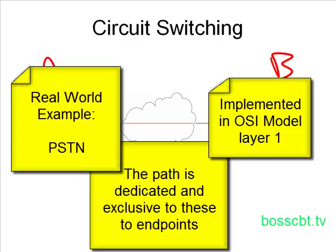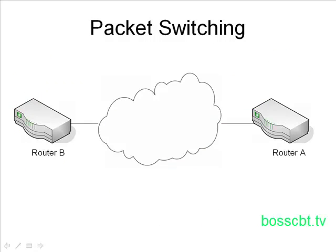Now let's move on to packet switching and see how that differs. With packet switching, we're going to use two routers connected to a service provider — their wide area network. To compare this to circuit switching: before these two routers can communicate, they do not have to implement a predetermined path, which was the case with circuit switching. A packet will be sent, and all of the devices between these two routers will determine the path dynamically.